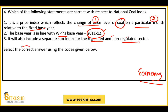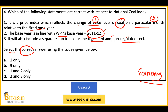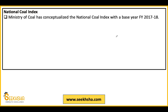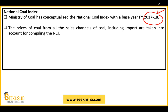The correct answer is option A — only the first statement is correct. The base year in statement 2 is wrong, and the non-regulated sector is not covered as described. The National Coal Index is under the Ministry of Coal with base year 2017-18. This is a very important point to remember — the examiner may directly ask: what is the base year of the National Coal Index?